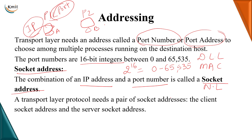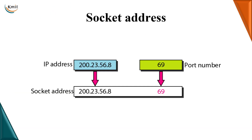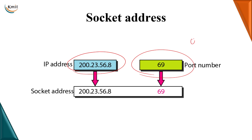One socket address is for the client and one socket address is for the server. For example, I have the IP address for identifying the host, and I have a port number which is a 16-bit integer ranging from 0 to 65535. Any one port number along with the IP address gives me the socket address.